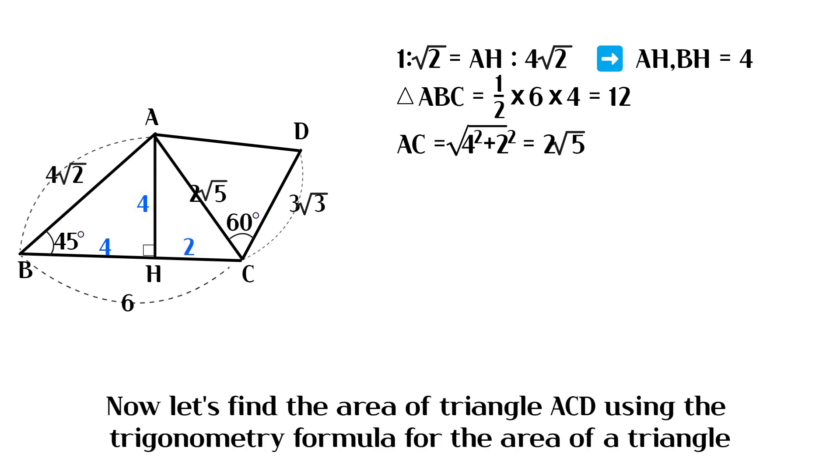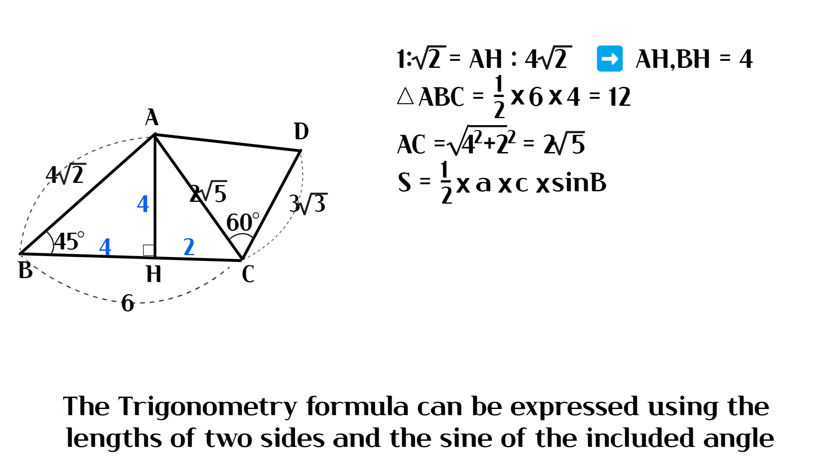Now let's find the area of triangle ACD using the trigonometry formula for the area of a triangle. The trigonometry formula can be expressed using the lengths of two sides and the sine of the included angle.